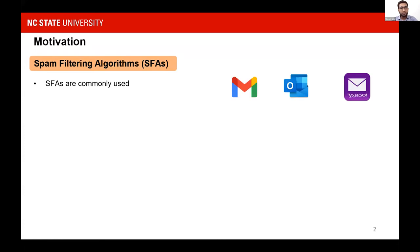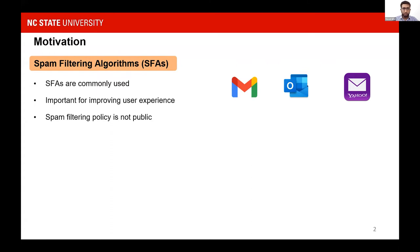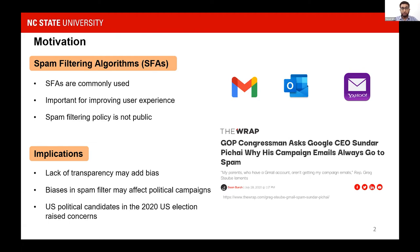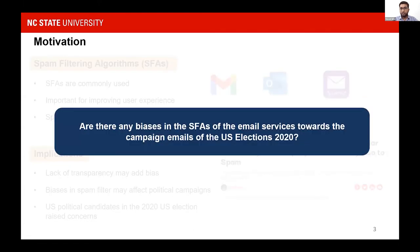Spam filtering algorithms, or SFAs, are quite commonly used by email service providers. These SFAs are important for user experience because they restrict unwanted emails from reaching the inbox of the user. Spam filtering policy is not made public by these service providers for obvious reasons such as exploitation by spammers. Since SFAs are not public, lack of transparency may add bias in the filtering policy, and if these biases exist, they may affect political campaign emails. For example, there were concerns raised by a GOP congressman about his campaign emails ending up in the spam folder. So all of this makes us wonder: are there any biases in the SFAs of email services toward the campaign emails of US elections 2020?